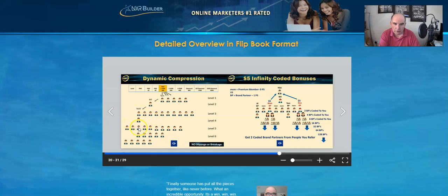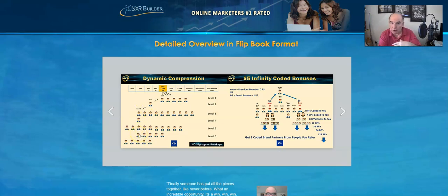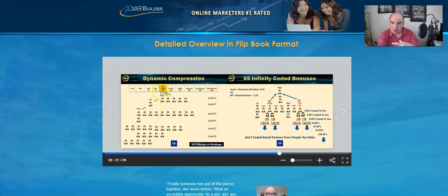So all these other levels, because he can't earn, would go up because of dynamic compression to the first one star, which in this case would be you. So you would earn all these levels of income as well. So they can apply to whoever.